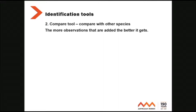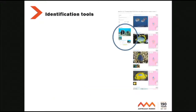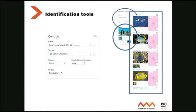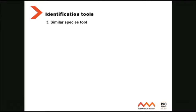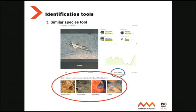Identification tool number two: compare tool. That's a photo I took last year at Ned's Beach on Lord Howe Island during field work for the Australian Museum. When you press the compare button you get your photo alongside fishes that could be confused with it. This isn't just about fish — think bigger than that. You get a control panel where you can adjust the place, adjust your taxon, even colours. Identification tool number three: the similar species tool. Click similar species and you get, unsurprisingly, a list of things that it could be confused with.